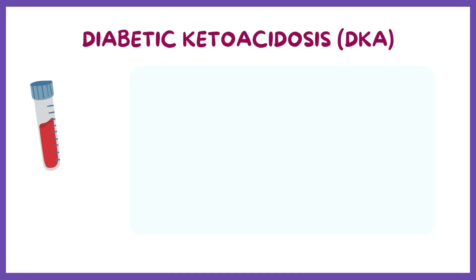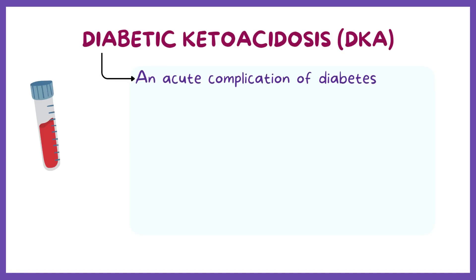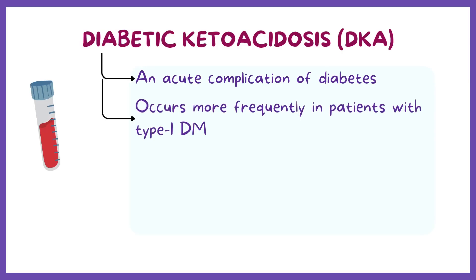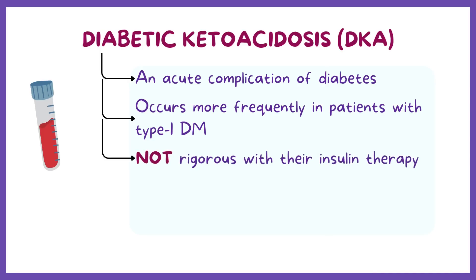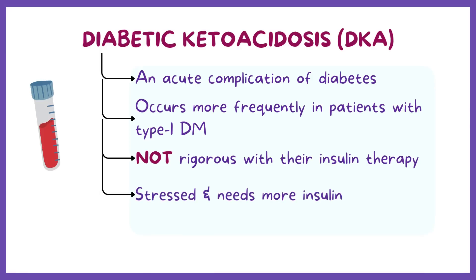Diabetic ketoacidosis is a potentially life-threatening acute complication of diabetes. It occurs more frequently in patients with type 1 diabetes. This usually happens when individuals aren't rigorous with their insulin therapy, or when the body is really stressed and needs more insulin, like during an infection.